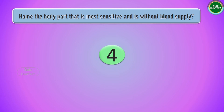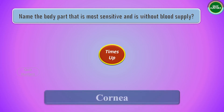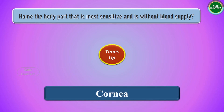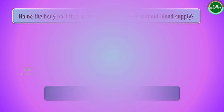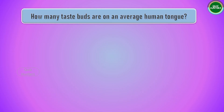Next question: name the body part that is most sensitive and without blood supply. The answer is the cornea. Next question: how many taste buds are on the average human tongue?